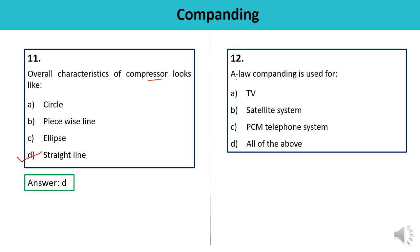Question number twelve: A law Companding is used for — TV, satellite system, PCM telephone system, or all of the above? A law Companding is commonly used for the PCM telephone system in Europe, so the answer is C. For comparison, Mu law Companding is used for speech and music signals. You must remember what each companding law is used for. C — PCM telephone systems — is the correct answer.